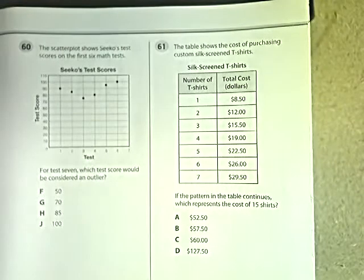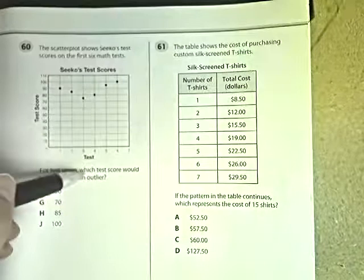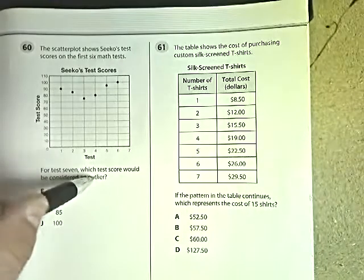This deals with data collection. This question says, for test seven, let me run the focus again, see if that'll work. There we go. For test seven, which test score would be considered an outlier?